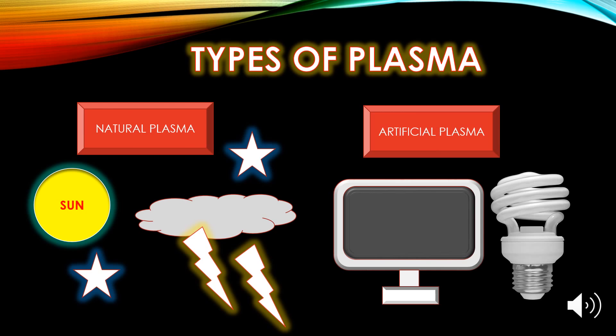There are two types of plasma. The first is natural plasma and the second is artificial plasma. Natural plasma exists only at very high temperatures — the minimum temperature for natural plasma is about 20,000 degrees Celsius. The Sun, stars, space, lightning, and luminous clouds are examples of natural plasma.